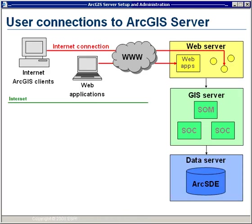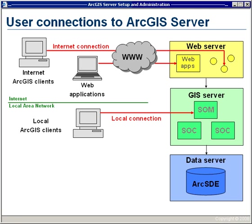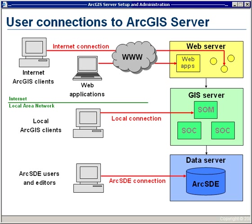Let's look at the different ways clients can access ArcGIS Server. Using the web server, users have a couple of options. One way is by using ArcGIS applications such as ArcMap or ArcGIS Explorer, making an internet connection to the service's web service endpoint. If your users don't have such clients, you'll need to provide a web mapping application they can open in a browser. For clients on the local area network, they can make a local connection directly into the GIS server, bypassing the web server and communicating directly with the SOM. You can also connect directly into your data server by making an ArcSDE connection, used by data editors or anyone wanting data from the source.